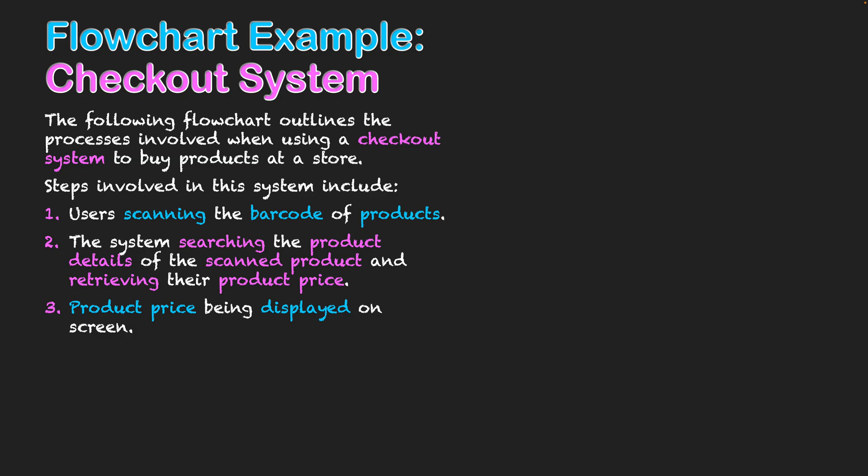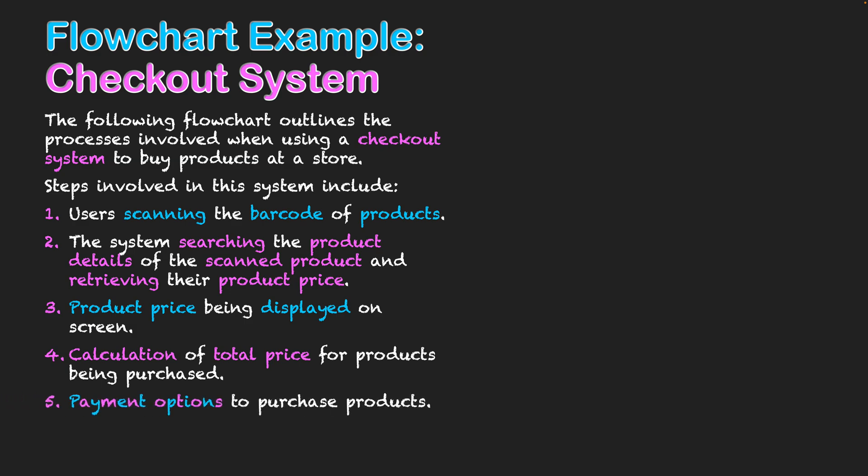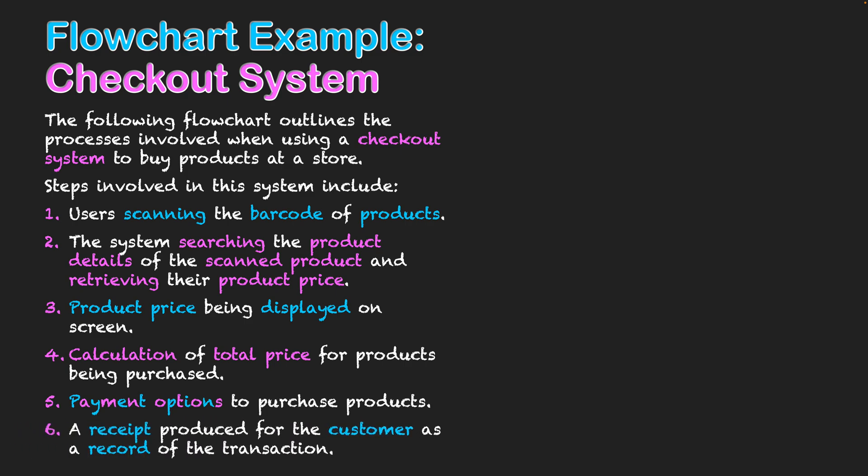Thirdly, the product price will be displayed on screen as a visual output to confirm the price of the product. Fourth, there'll be a calculation of total price for all the products when it's time to purchase them. Fifth, there'll be payment options for the purchase of the products, and finally a receipt is to be produced for the customer as a record of the transaction.